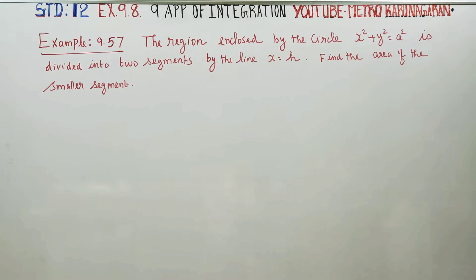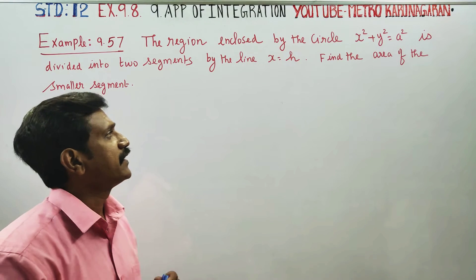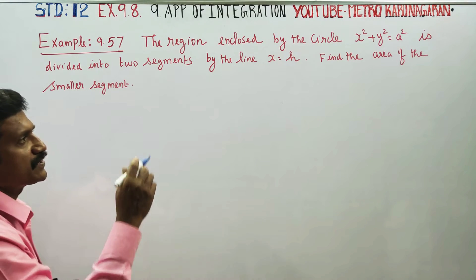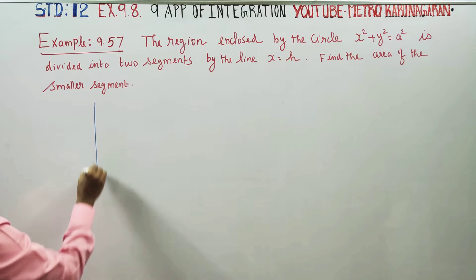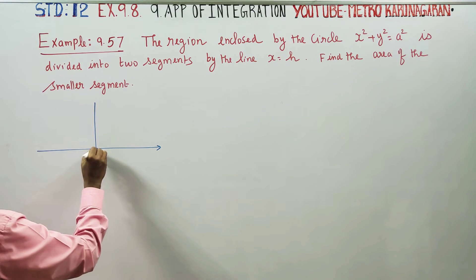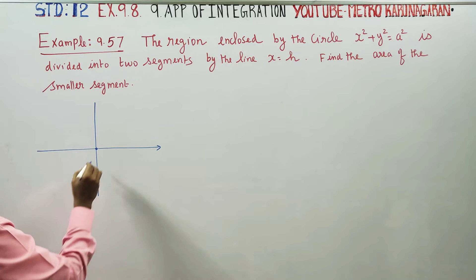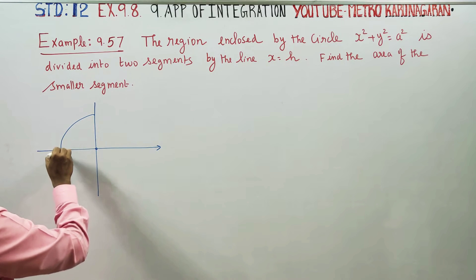Hello Toll Standard students, I am Mettro Karanagaran. In example 9.57, find the region enclosed by the circle. x² + y² = a². x² + y² = a² is the circle with the center as origin and radius a.